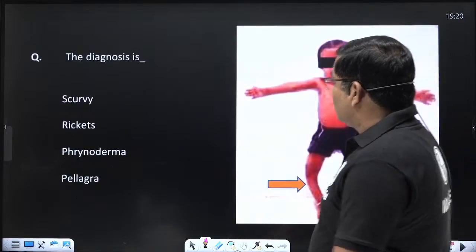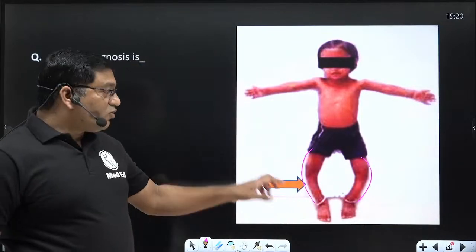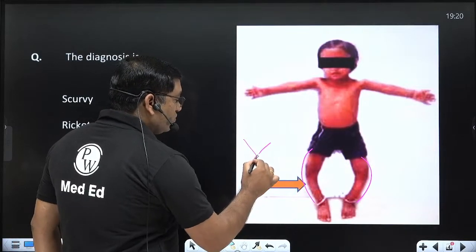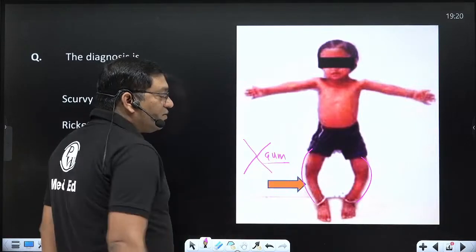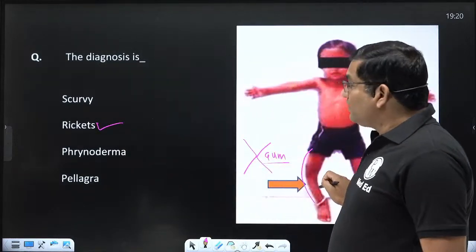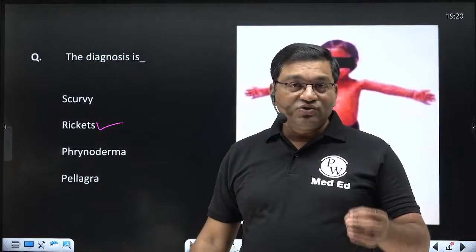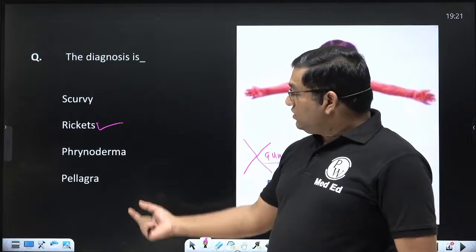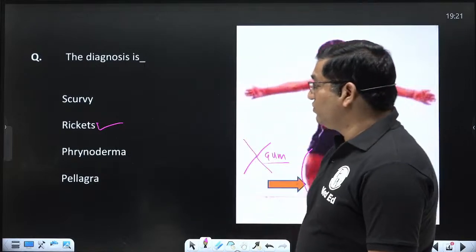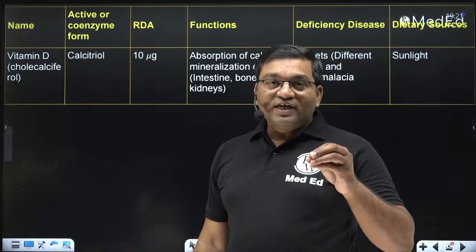The diagnosis here is rickets, as bowing of the legs is present. In scurvy, the typical features are bleeding gums and petechial hemorrhages all over the body. Phrynoderm is due to essential fatty acid and vitamin A deficiency — there is hyperkeratosis and toad-like skin. In pellagra, there is diarrhea, dementia, and dermatitis. So here the diagnosis is rickets.